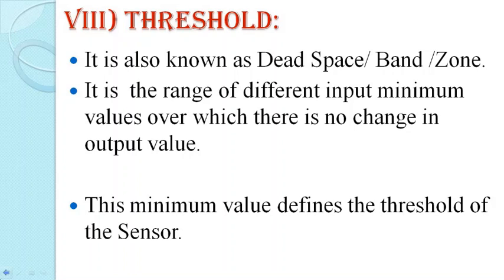The next static characteristic is threshold, also known as dead space, dead band, and dead zone. It is the range of different input minimum values over which there is no change in output value — this minimum value defines the threshold of the sensor. When you give an input to the sensor but the output does not change and remains the same, that space, band, or zone is known as the threshold, dead space, or dead band.